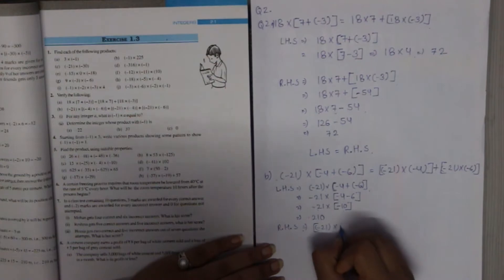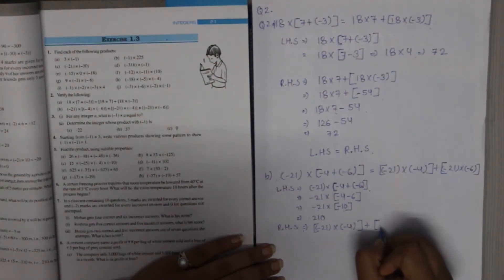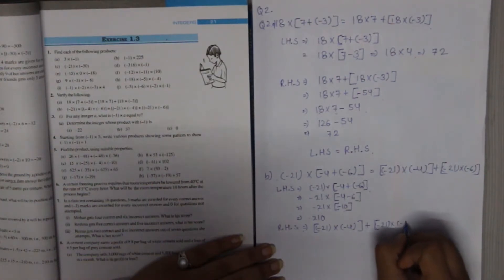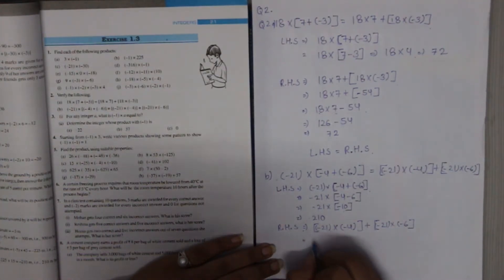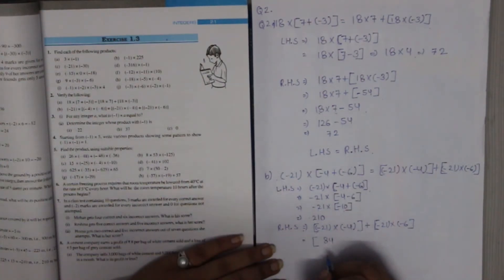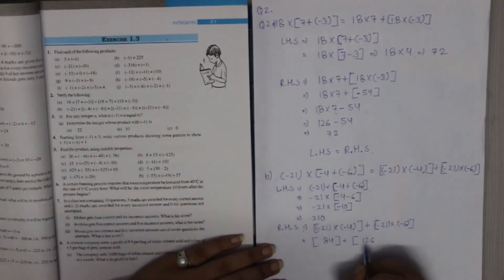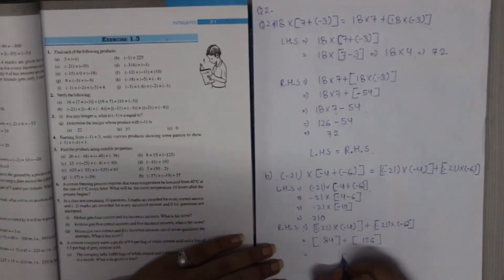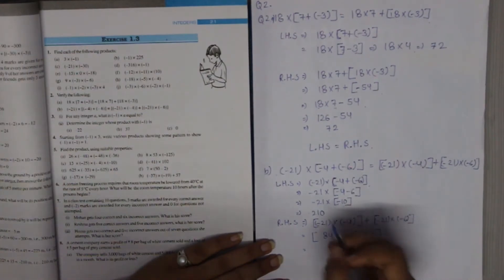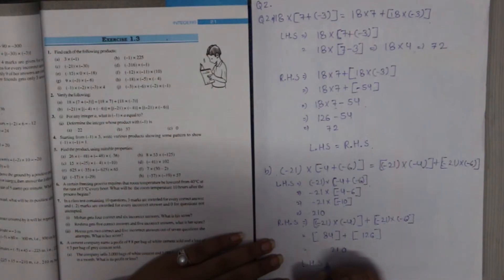For the right-hand side: minus 21 multiplied by minus 4 plus minus 21 multiplied by minus 6. First: minus 21 times minus 4 equals 84, and negative times negative makes it positive. Then minus 21 times minus 6 equals 126, negative times negative is positive. Adding: 84 plus 126 equals 210. Left-hand side equals right-hand side — statement verified.